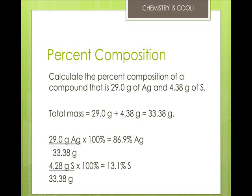So if we're going to calculate the percent composition of a compound that is 29 grams of silver and 4.38 grams of sulfur, we take the total mass, which is 33.8. Then we take each component and divide it by 33.8, multiply it by 100, and that gives our percent compositions.